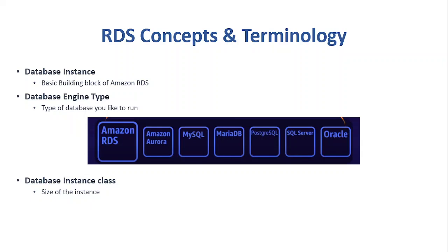These are the database engine types currently available in RDS: MySQL, MariaDB, PostgreSQL, SQL Server, Oracle, and Amazon Aurora, which is a proprietary AWS relational database engine compatible only with MySQL and PostgreSQL.